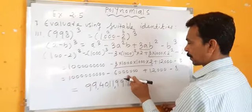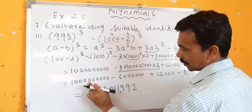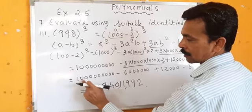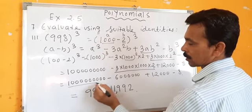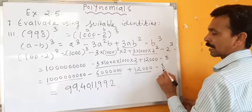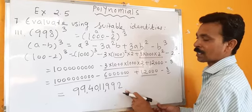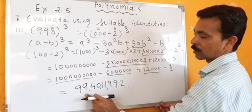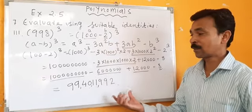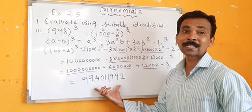1,000,000,000 minus 6,000,000 is 994,000,000, which is 99 crores 40 lakhs. Adding 12,000 minus 8 gives 994,011,992. So the answer is 994,011,992. You have to do these calculations correctly because a lot of space is needed.